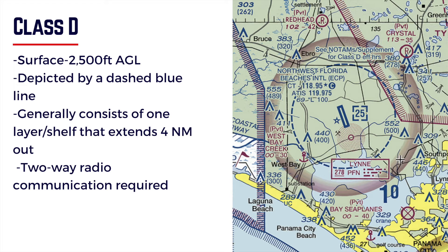Class D starts at the surface and goes up to 2,500 feet above ground level. Keep in mind, what you see on the VFR sectional chart is going to be that mean sea level number. It's depicted by a blue dashed line, and it generally consists of one layer or shell that extends four nautical miles out from the center of the airport, just like the image to your right that shows Northwest Florida Beaches International.